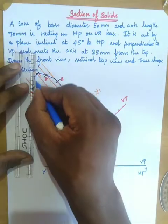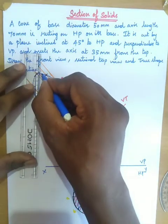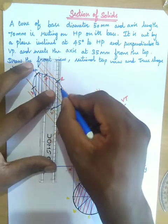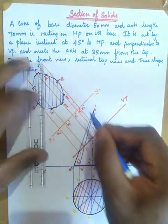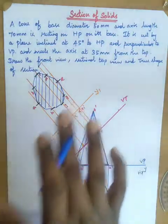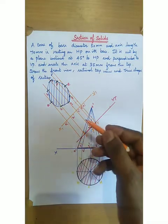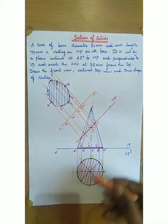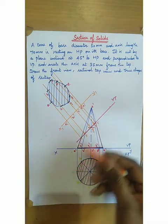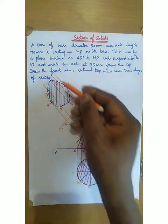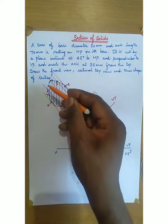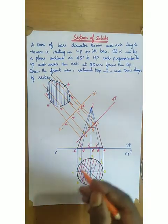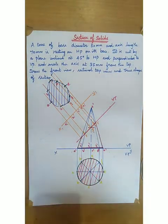Now hatch the true shape of section. The front view section is inclined at 45 degrees, the top view section is also hatched, and the true shape of section for the cone solid model has been developed. This is the section of solid for the cone. If you like the video, please like and subscribe. Thank you.